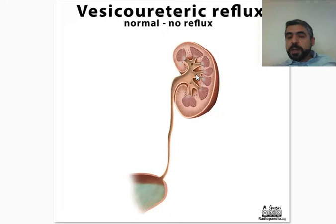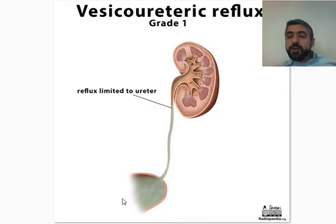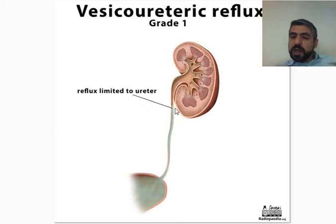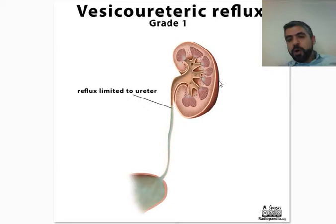This is what's called Grade 1 reflux. When the urine goes back, it goes into the ureter for a variable length, resulting in mild hydroureter, but it does not go back into the pelvicalyceal system — it does not go all the way back into the kidney. Grade 1 will usually resolve with time and restore to normal, so you typically wait and see for this kind of reflux.